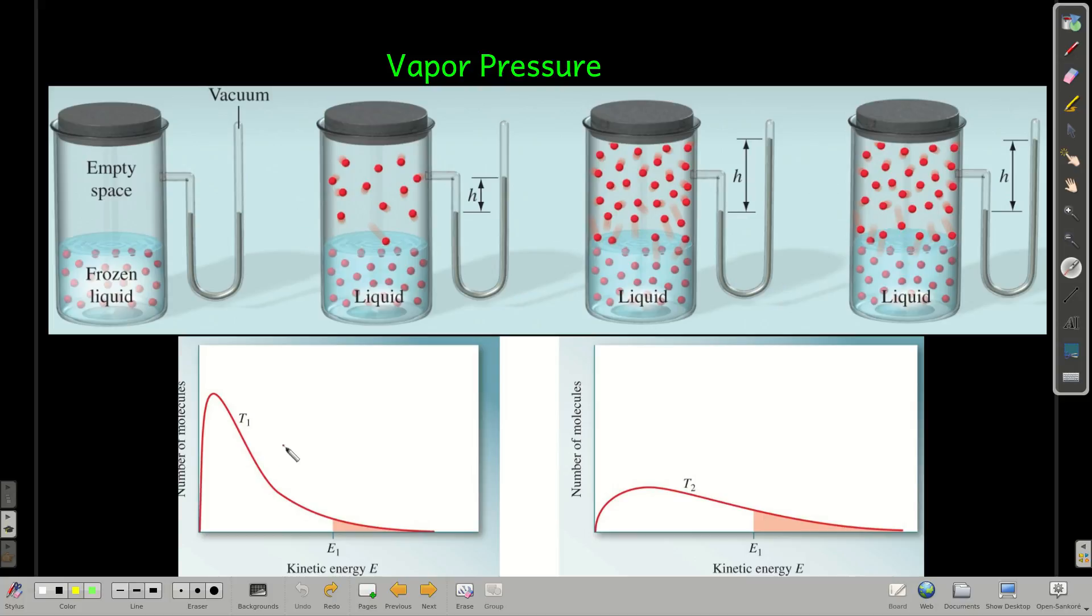Now, to understand this better, let's look at the distribution of energy amongst the molecules. These graphs show how many molecules have a certain kinetic energy. At one temperature here, T1, which is less than this temperature T2. We can see that this shaded area is how many molecules have enough energy greater than the amount needed to escape from the surface, E1.